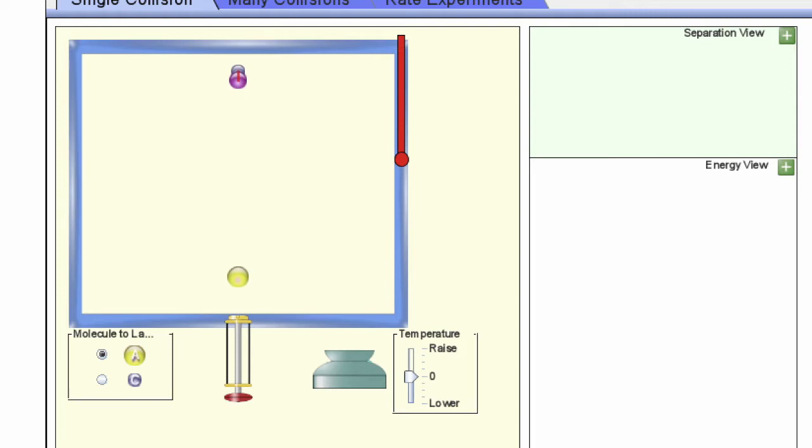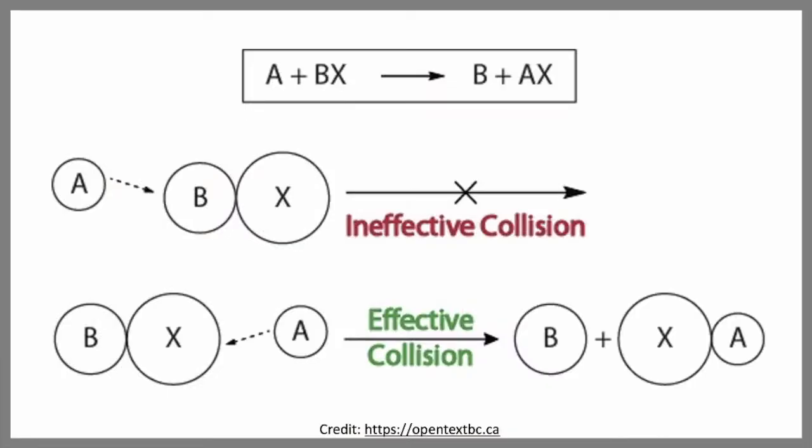This picture gives an example. In both the top and bottom scenarios we have the same two species colliding. However, in the top scenario species A is colliding with species BX in the wrong orientation and a reaction can't happen—it's hitting the wrong side. In the bottom example, A is colliding with BX in the proper orientation and a reaction can happen. This is an effective collision.